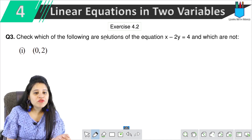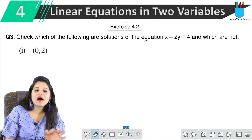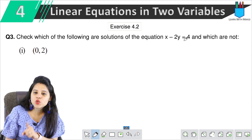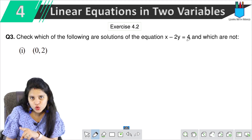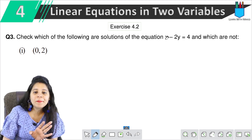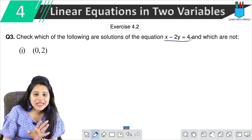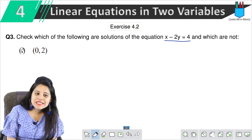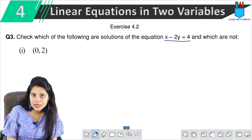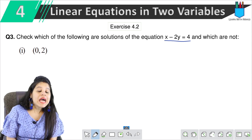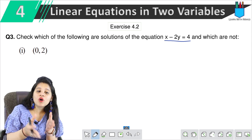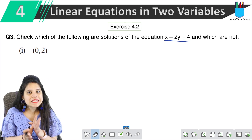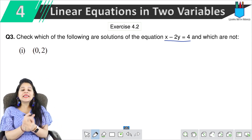Check which of the following are solutions of the equation x - 2y = 4. We have to check each part and tell which one is the solution and which one is not.